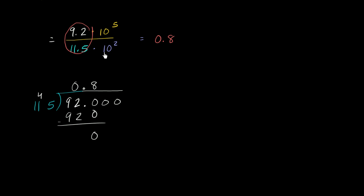And then 10 to the fifth divided by 10 to the second - that's going to be the same thing, we have the same base and we're dividing, so we can subtract the exponents. That's going to be 10 to the 5 minus 2, or 10 to the third power.